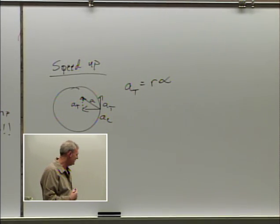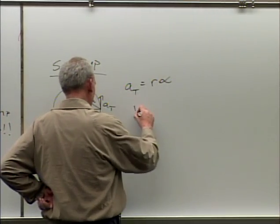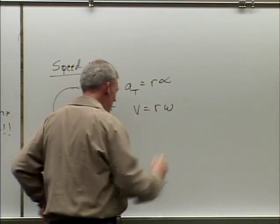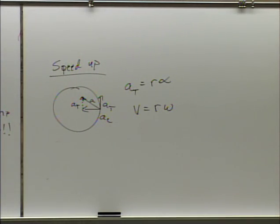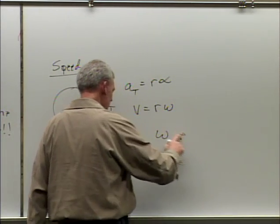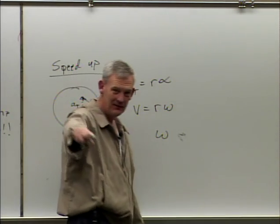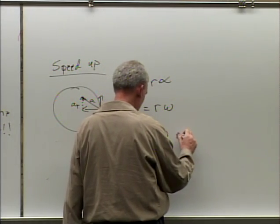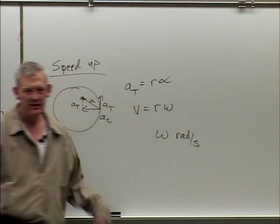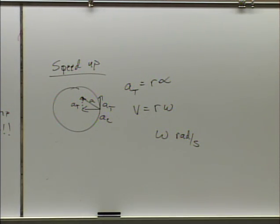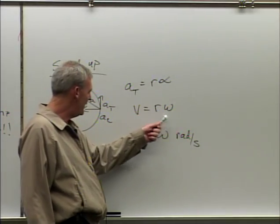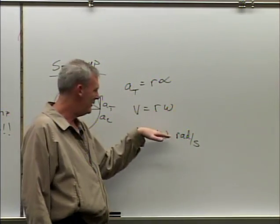at equals r times alpha, where alpha is the angular acceleration. We also know that v equals r times omega. The units for omega are radians per second. When you multiply radians per second by meters, you pretty much throw the radians out and you get meters per second.